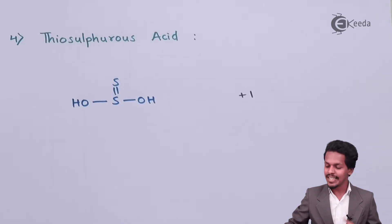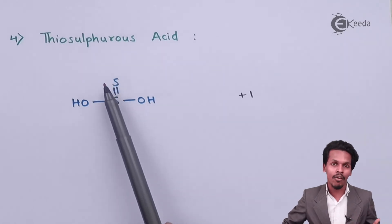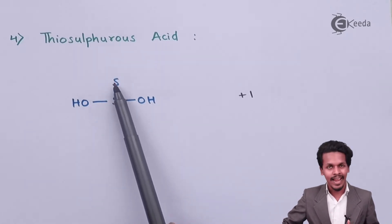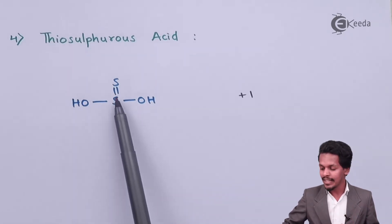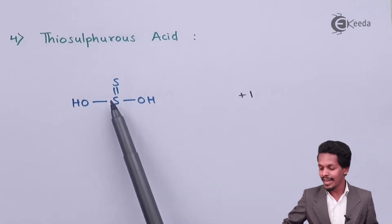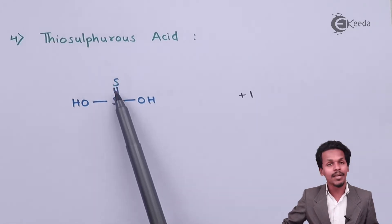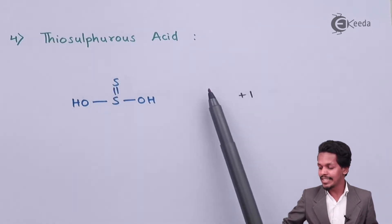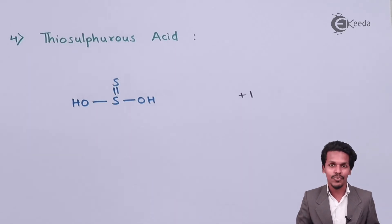Next is thiosulphurous acid. The prefix 'thio' means that where oxygen would normally appear, there is instead a sulfur atom. The structure resembles the previous ones — two OH groups satisfy the valencies of the central sulfur — but here sulfur is bonded to another sulfur with a double bond. The oxidation state of sulfur is plus 1.